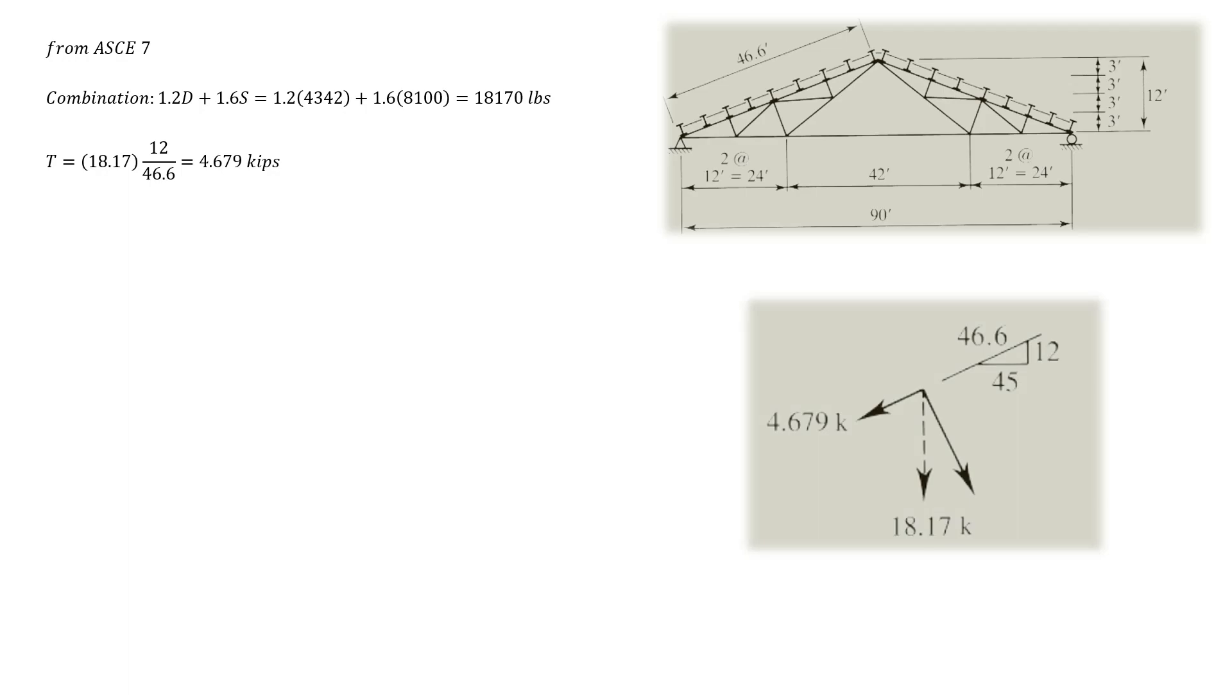To resolve for the component parallel to the roof, we multiply the ultimate vertical load by the ratio of the height of the truss to the slope length of the truss. We can then use this load to calculate the required cross-sectional area from equation D2-2 of the AISC specifications.